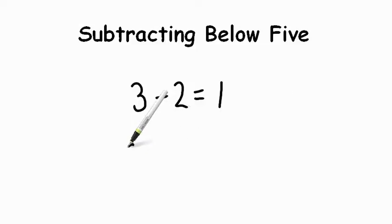If we think about it, we have 3 objects: 1, 2, 3. We take away 2 of them: 1, 2. We're left over with that 1. So 3 minus 2 equals 1.